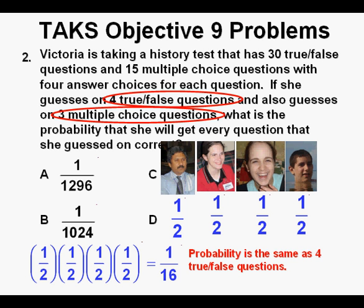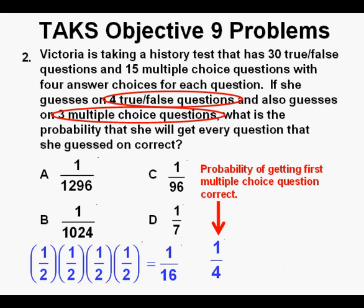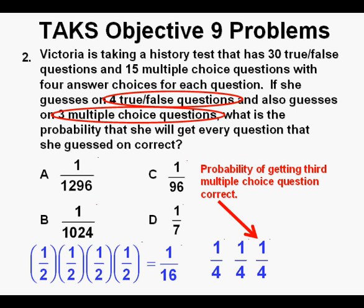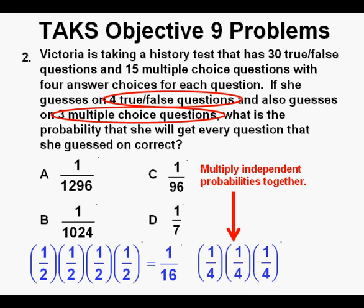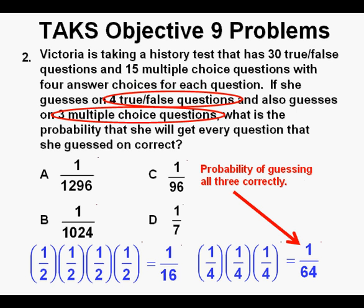For the three multiple-choice questions, the probability of answering the first one correctly is 1 out of 4, or 25%. The second is also 1 out of 4, and the third is also 1 out of 4. To find the probability of guessing all three problems correctly: 1 fourth times 1 fourth times 1 fourth equals 1 out of 64.